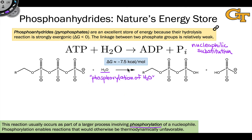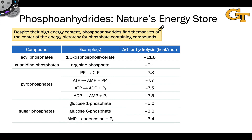This reaction is quite exergonic — quite energy-releasing and therefore spontaneous, about negative 7.5 kilocalories per mole. This means that it can make endergonic or unfavorable processes happen, provided their delta Gs are in the right range.